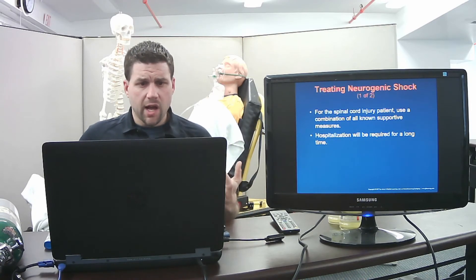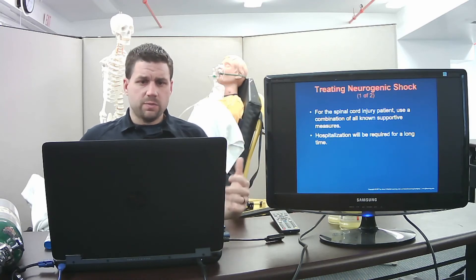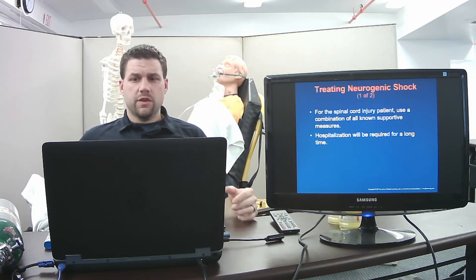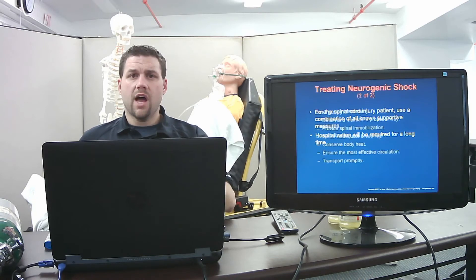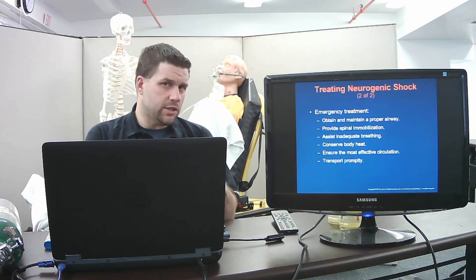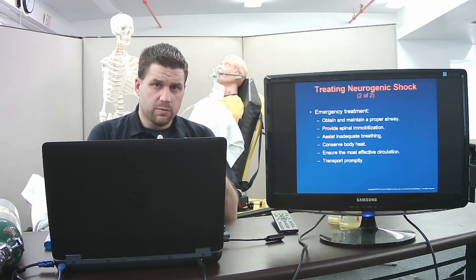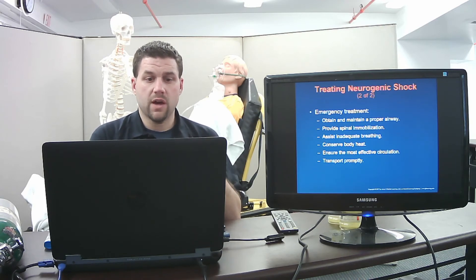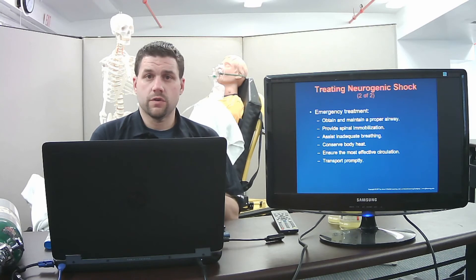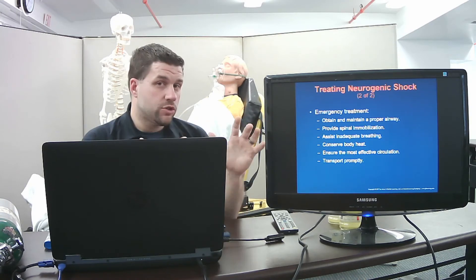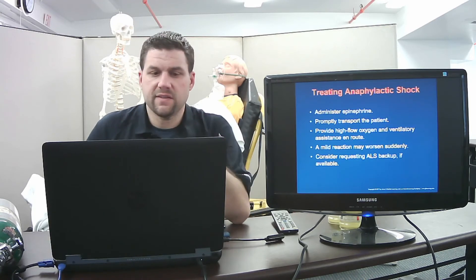For neurogenic shock, maintain a high index of suspicion for spinal cord injury. Maintain a proper airway using jaw thrust, provide spinal immobilization, assist ventilation, conserve body heat — these patients can't regulate their own temperature — and ensure effective circulation. These patients require rapid transport to the hospital.